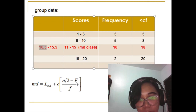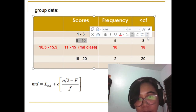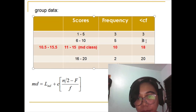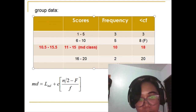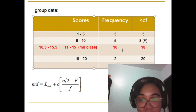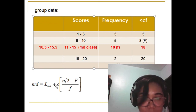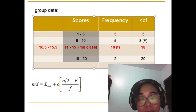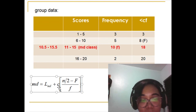The big F represents the less-than cumulative frequency one step below your median class. If this is the median class, then the one-step-lower class has a cumulative frequency of 8. The small f is the frequency of the median class, which is 10. The class size is simply the difference between two consecutive lower limits or two consecutive upper limits.